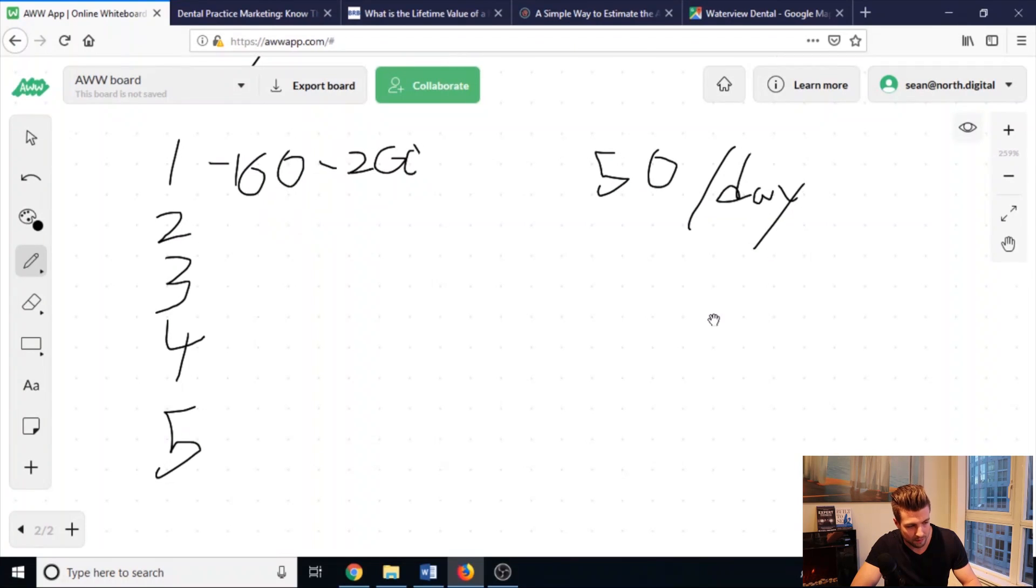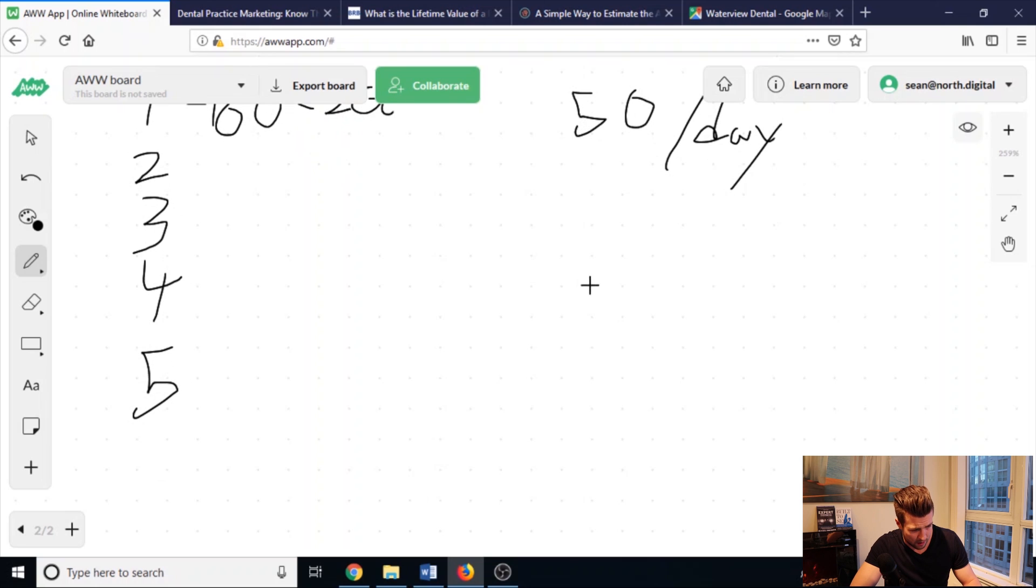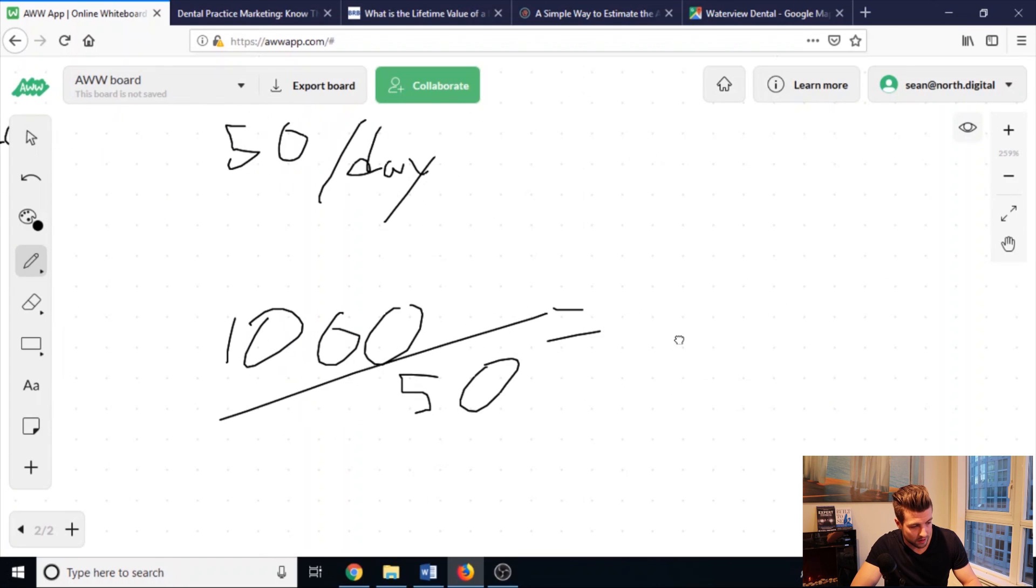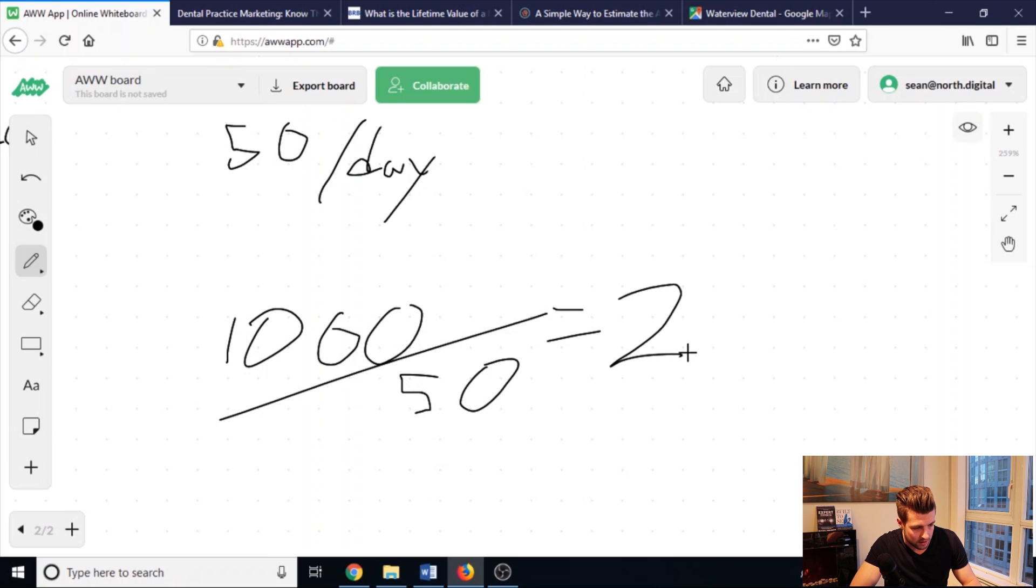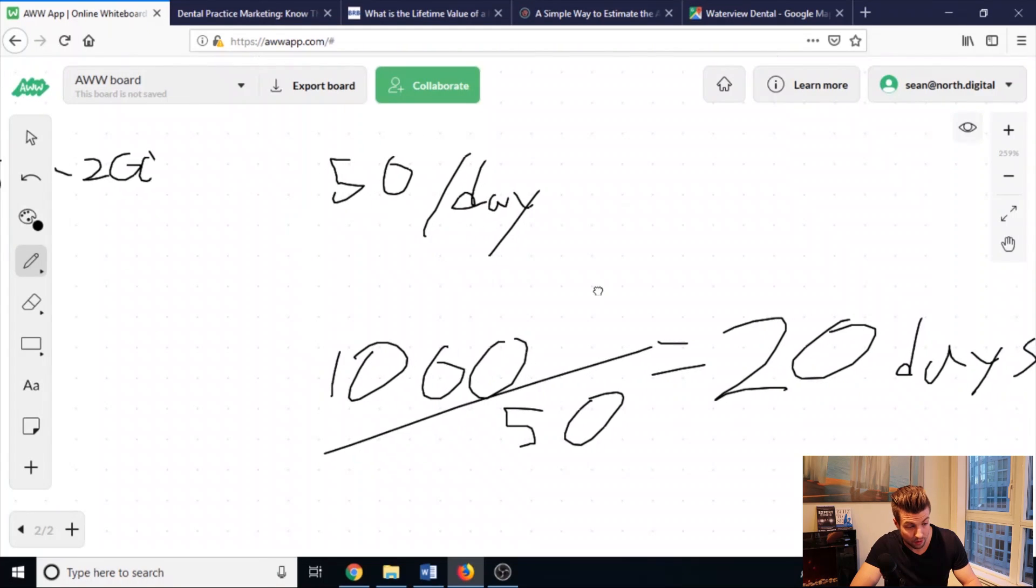So you're going to have to approach 1,000 businesses to get five of them to say yes. Now, that is actually going to be able to be completed quite quickly. If we take 1,000 businesses divided by 50 per day, that is literally 20 days of prospecting to go and get five clients and build a six-figure business.